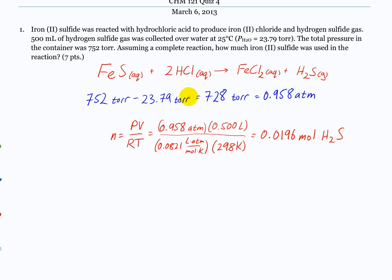So then based on the equation, how many moles of iron sulfide did we start with? The same. So then we started with 0.0196 moles iron sulfide times the molar mass of iron sulfide. So that's going to be 55.8 plus 64.